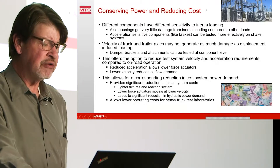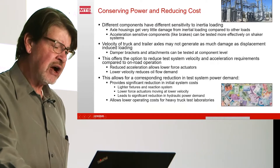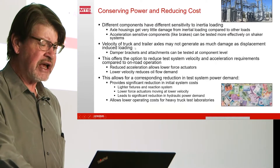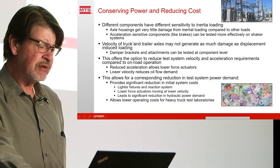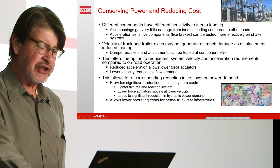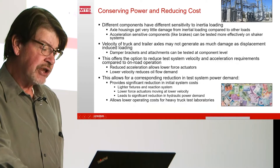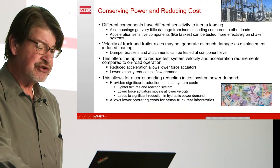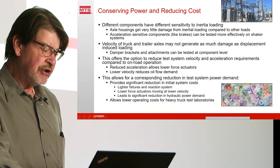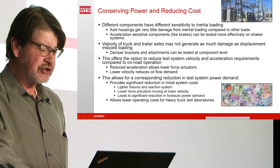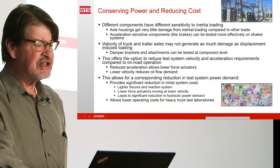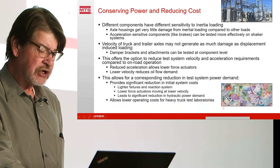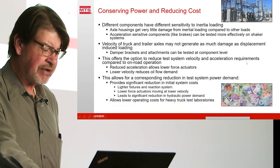So how are we going to conserve power and reduce cost? Different components have different sensitivity to inertial loading. The velocity of truck and trailer axles may not generate much damage as displacement does. The dampers and things can be tested at the component level. So that offers an option to reduce test velocity, possibly test frequency, to reduce the acceleration and reduce the force. Reducing acceleration means lower force; reducing velocity means lower velocity at the pistons is less oil flow demand. That allows a corresponding reduction in test system power.